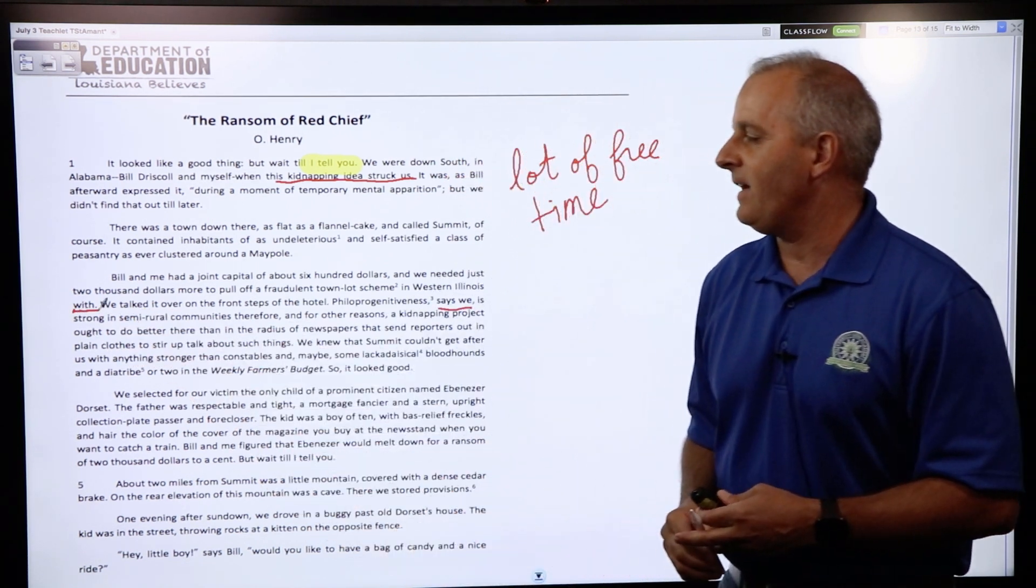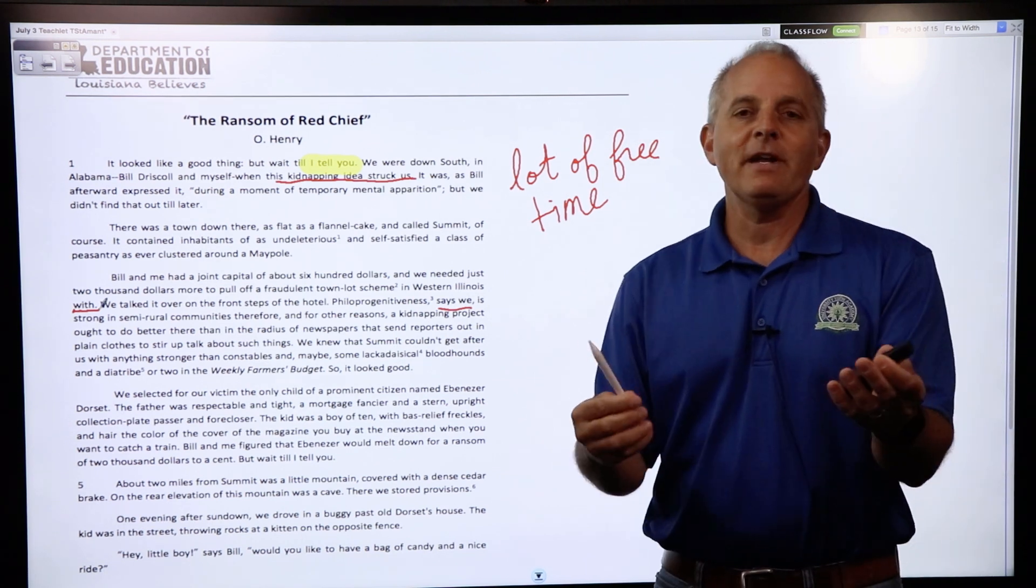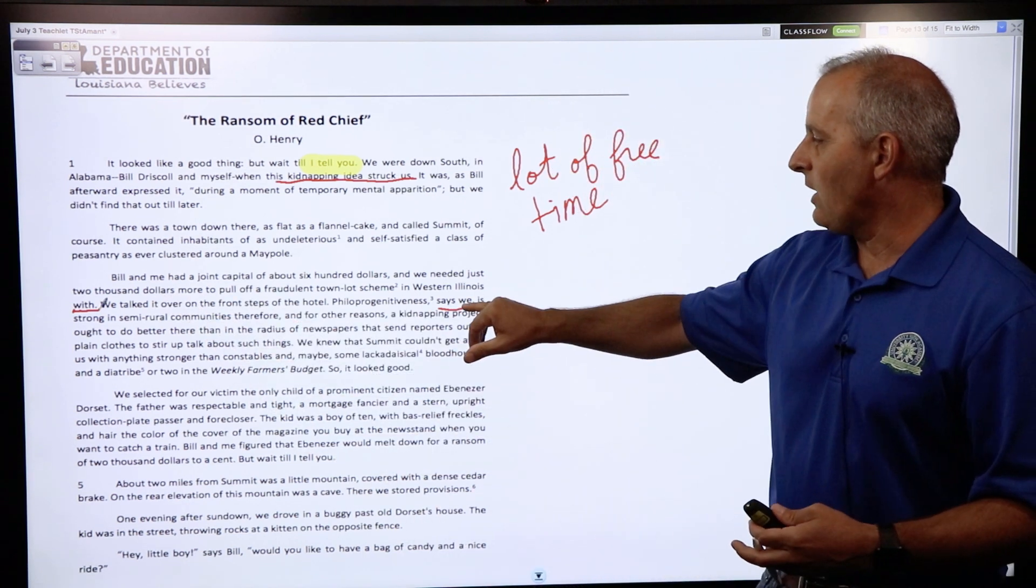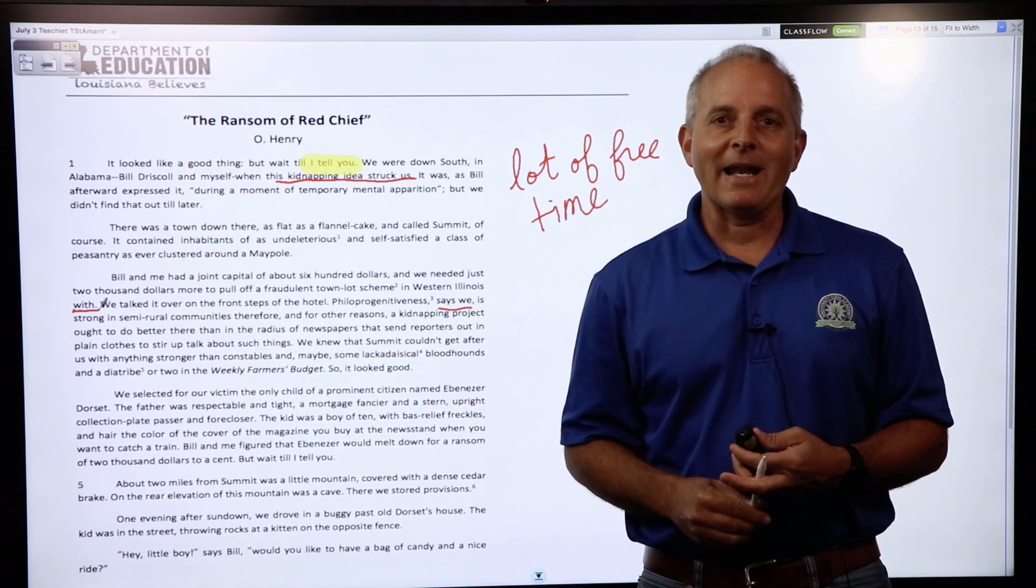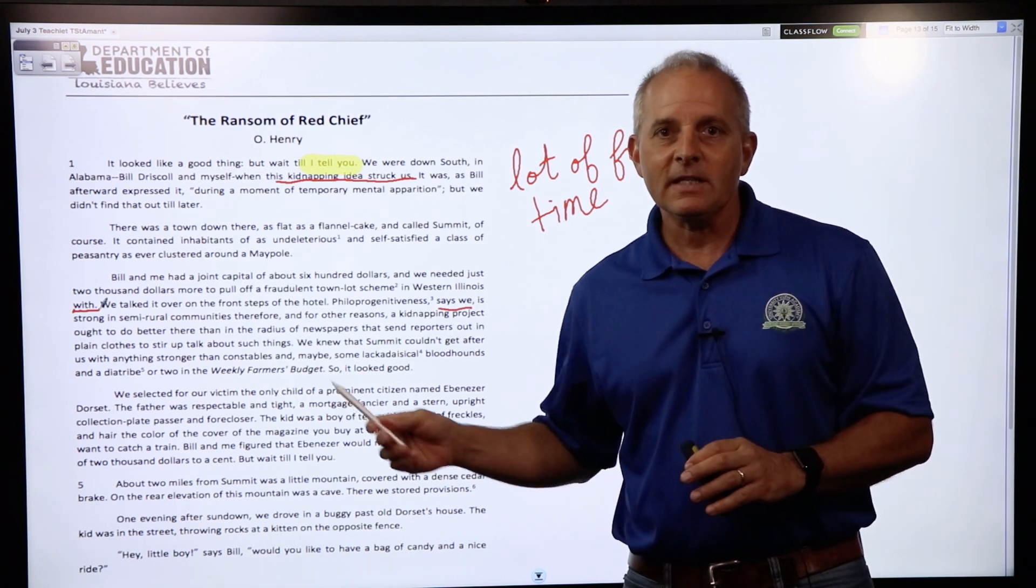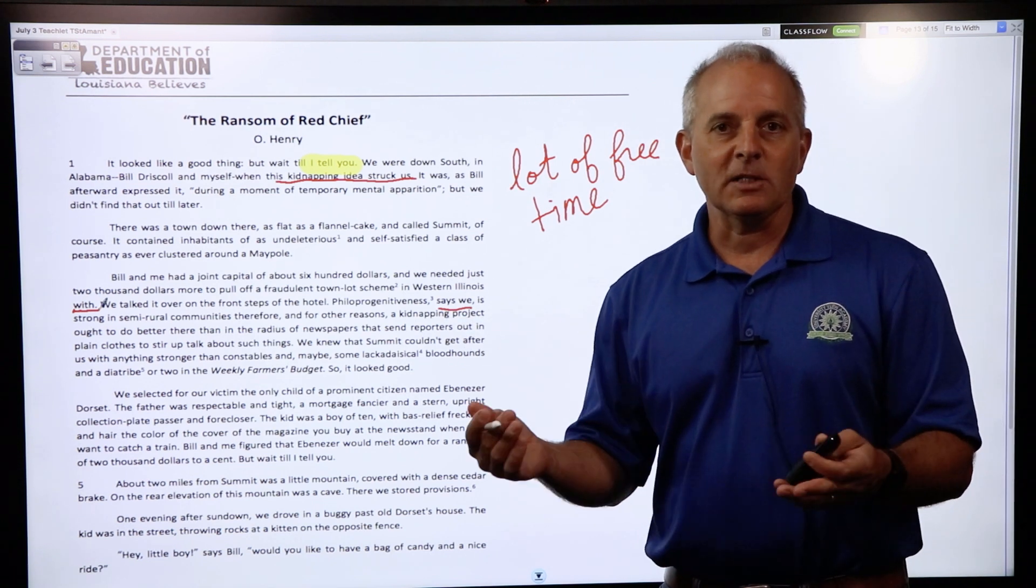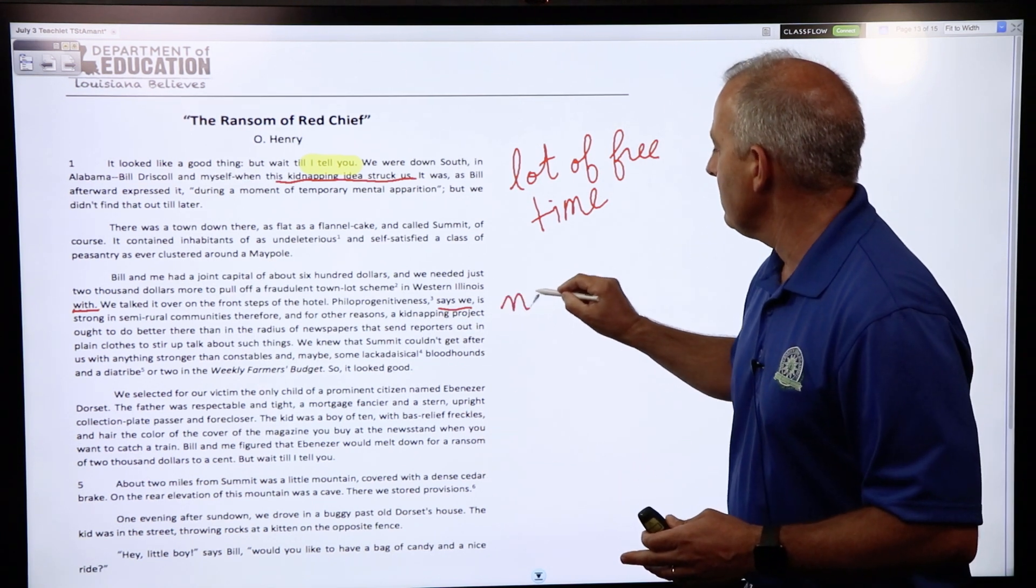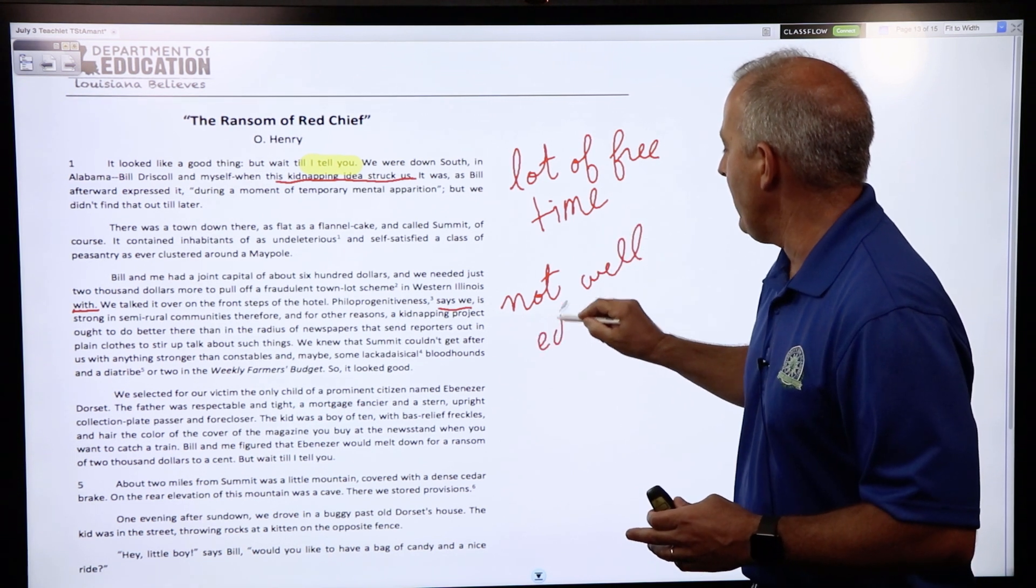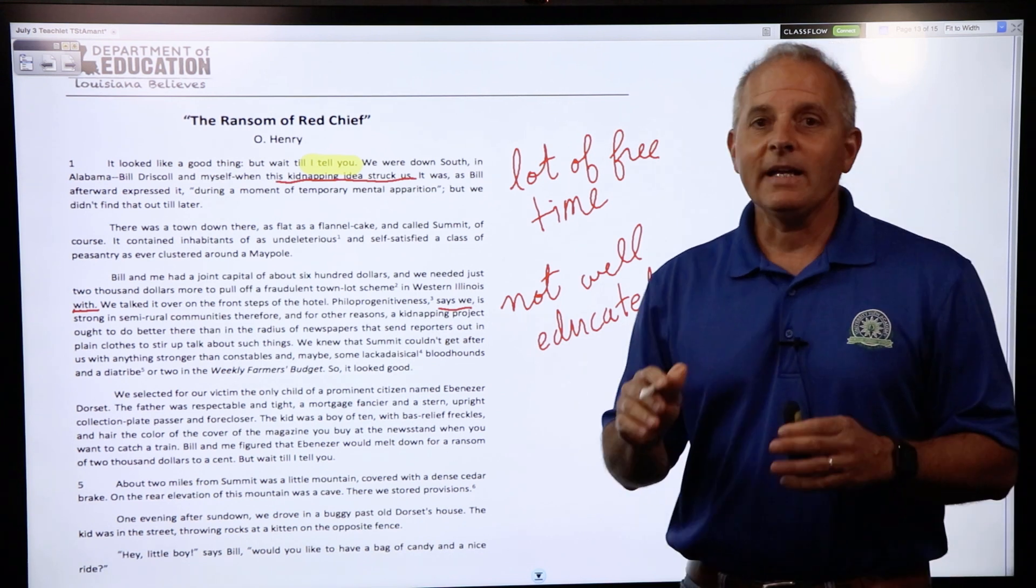This is also not grammatically correct: 'says we.' So I think what we can surmise from this part of the text is that the narrator and his partner were not well educated. These are things that we can annotate in the margin that just help us understand who the narrator is, what kind of person he is, and his partner.